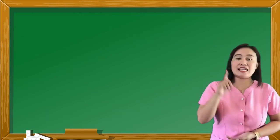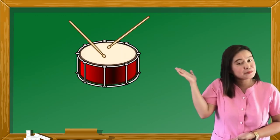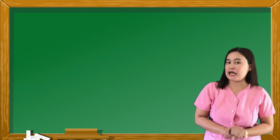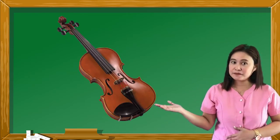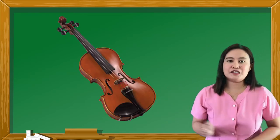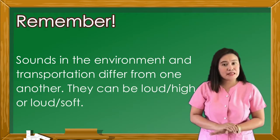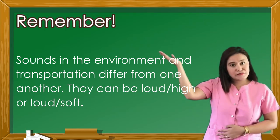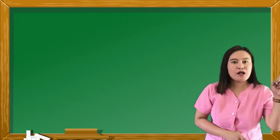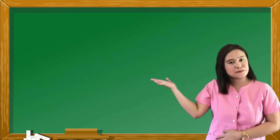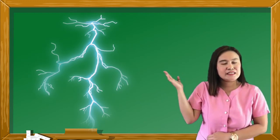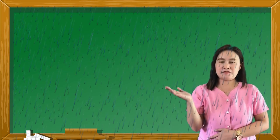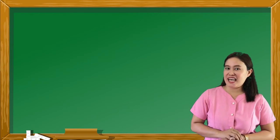Some musical instruments produce loud or soft sound. An example of an instrument that has a loud sound is... Very good! Now, an example of an instrument that has a soft sound is... That's great! Now, sounds in the environment and transportation differ from one another. They can be loud or soft. An example of a loud sound is... Very good! Now, we'll give you an example of a soft sound. Yes, very good! Now, let's move on to our next activity.